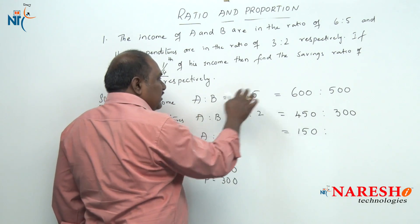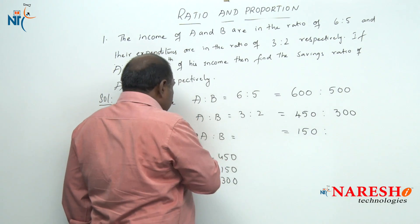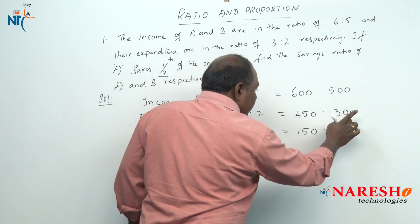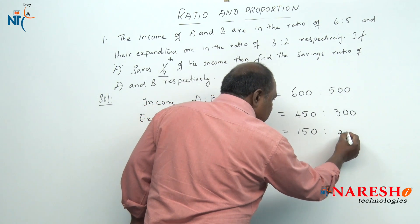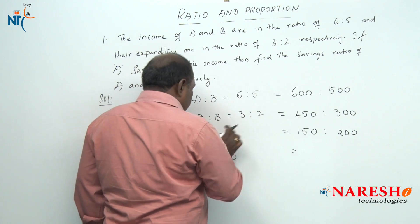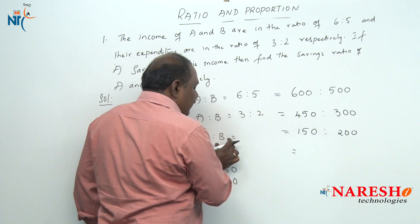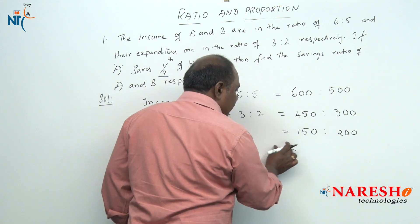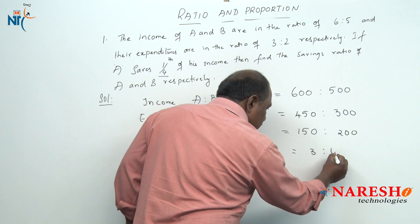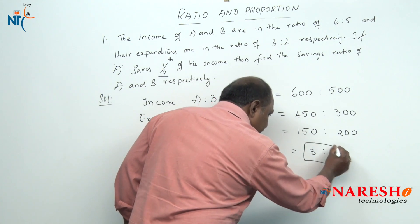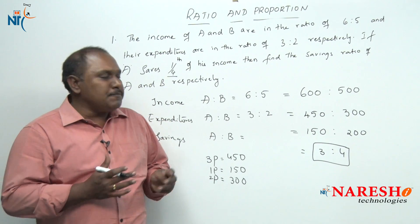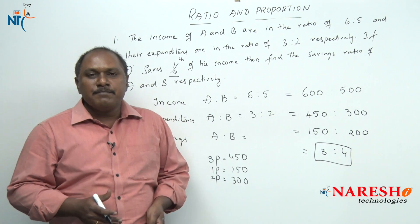The income of B is 500 and the expenditure of B is 300, so the savings of B should be 500 minus 300, which is 200. The savings ratio of A and B is 150 is to 200, which simplifies to 3 is to 4. This is how we can answer this particular question in a very simple way.